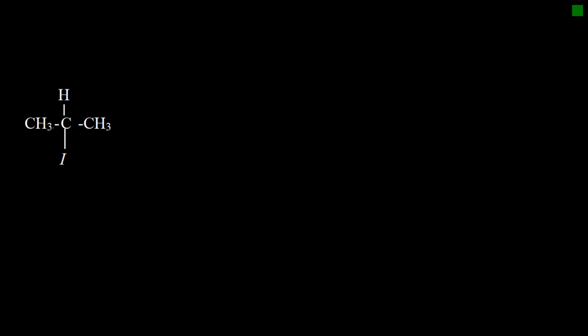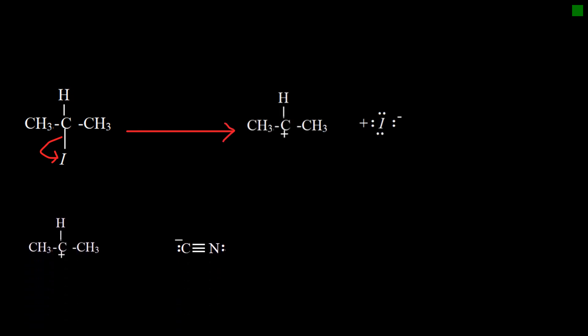Alternatively, you can consider the SN1 mechanism. The secondary alkyl chloride undergoes self-ionization to produce a carbocation. This carbocation attracts electrons from the cyanide ion to form a nitrile molecule. The reaction happens in two steps; the first step is the slow step while the second is faster. Because we consider the slow step as the rate-determining step, and it involves only one chemical species — the substrate — it is an SN1 mechanism.